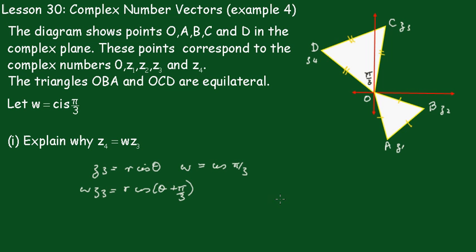Now we know that Z4 here must be θ plus π upon 3. So that will be R cis θ plus π upon 3.